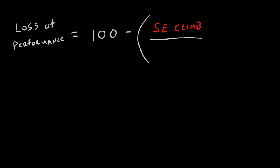And the equation looks something like this. Loss of performance equals 100 minus your single engine climb rate divided by your dual engine climb rate. Both engines climb. And that number times 100.